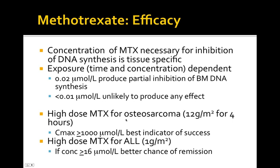High-dose methotrexate for osteosarcoma is given at 12 grams per meter squared over four hours, and you want a C-max of at least 1000 micromoles per liter — this is the best indicator of success. High-dose methotrexate for ALL is only 1 gram per meter squared. If the concentration is greater than or equal to 16 micromoles per liter, you have a better chance of remission. You don't nearly need as high a dose for ALL as for osteosarcoma.